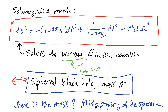Recall how we define m: we define it using a Kepler-type experiment where we release a particle or satellite at large r and measure its period and relate that to the mass m. So the measurement or identification of the mass has nothing to do with the presence of any material particles.